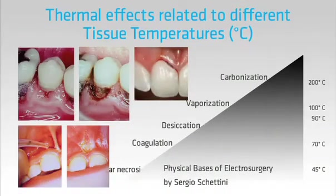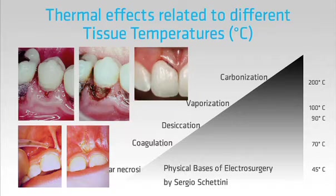Let's now look more carefully at the types of thermal effects on tissue caused by laser treatment. We can see these effects by observing how the tissue responds to laser energy. The trend of effects caused by heat is the same as those for electrosurgery, so let's use this simple graph of what happens as we move to higher and higher temperatures.